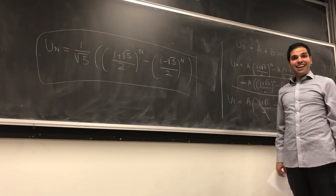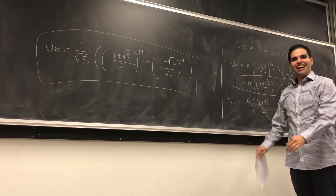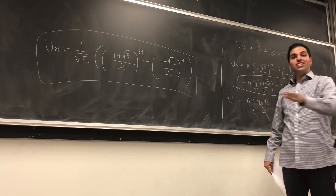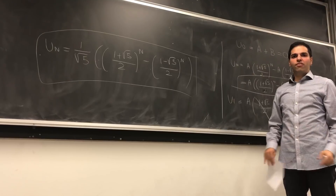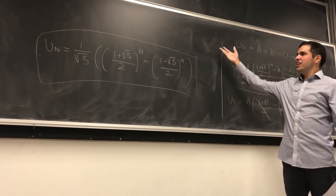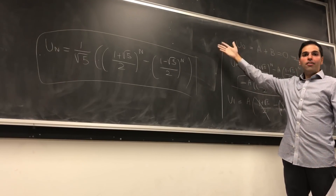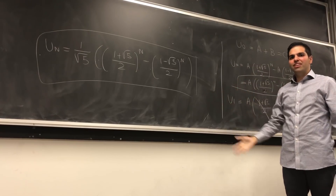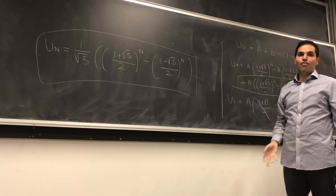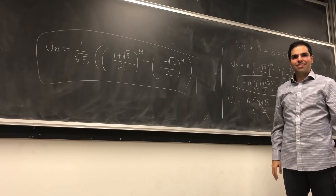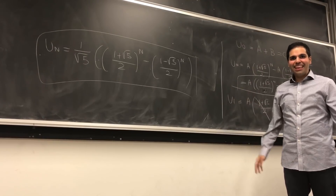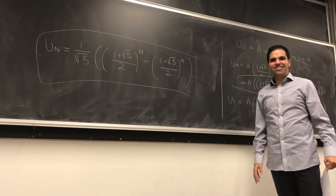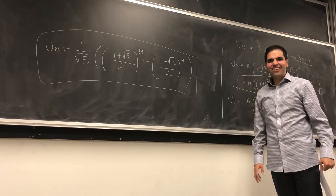Ta-da! How neat and quick was that? The nice thing is, as I said, you can generalize this to more general recurrence relations — all you have to do is find the auxiliary equation, solve it, and then solve for the constants a and b. If you like that and you like more math fun, please make sure to subscribe to my channel. Thank you very much.